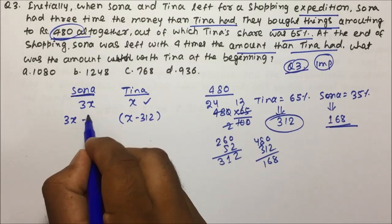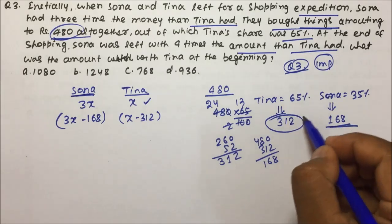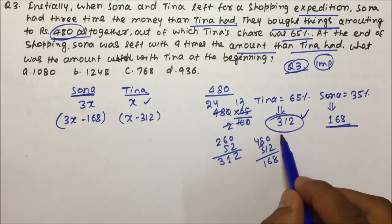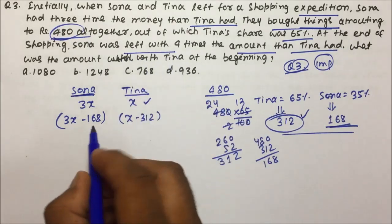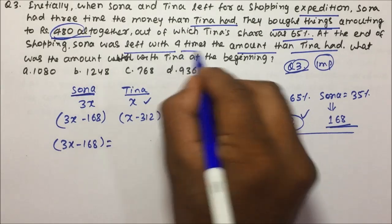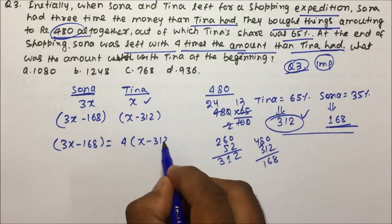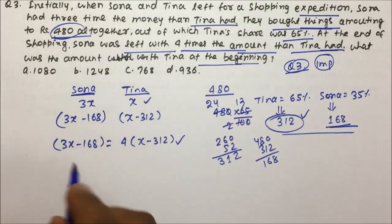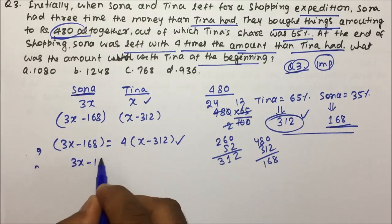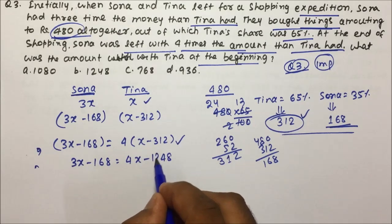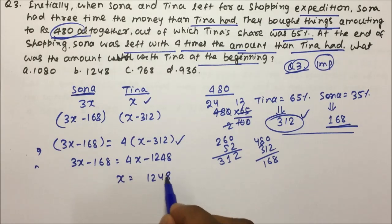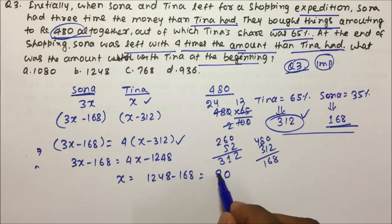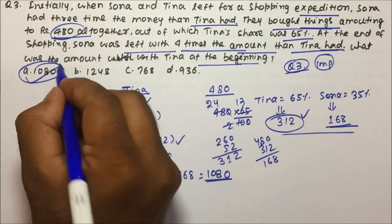Tina spent 312 rupees and Sona spent 168 rupees. At the end of the shopping, Sona was left with 4 times the amount that Tina had. Setting up the equation: 3X−168 = 4×(X−312), which gives 3X−168 = 4X−1248, so X = 1248−168 = 1080. Therefore, Tina had 1080 rupees in the beginning.